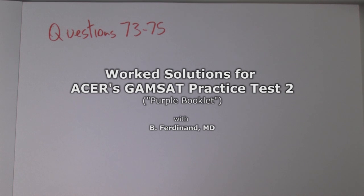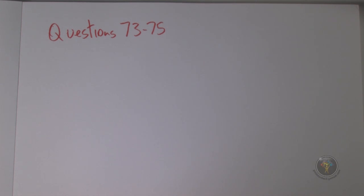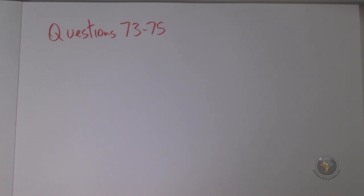Questions 73 to 75 involve an x-ray beam passing through some absorbing material — monochromatic. I₀ is the initial intensity of the beam and I is the intensity that emerges on the other side. I₀ is the one coming in, and x is the thickness in centimeters.